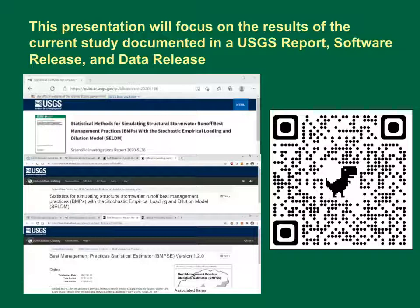The report was published as U.S. Geological Survey Scientific Investigations Report 2020-5136. It describes methods and results and is accompanied by three appendix tables with detailed statistics for 51 water quality constituents by category. The data release is Statistics for Simulating Structural Stormwater Runoff Best Management Practices with a Stochastic Empirical Loading and Dilution Model. The data release has the analysis spreadsheet tools and statistics for individual study sites, as well as SELDOM import files with all the statistics by BMP category. The software release is the Best Management Practice Statistical Estimator, and the BMPSE was used to calculate many of the statistics in the final report.